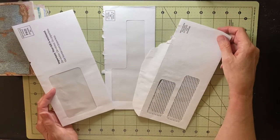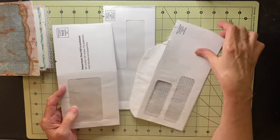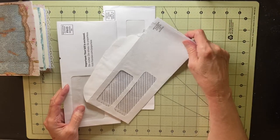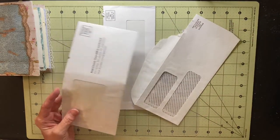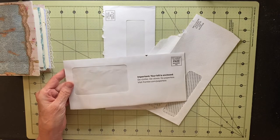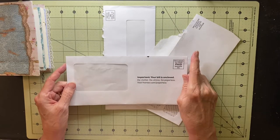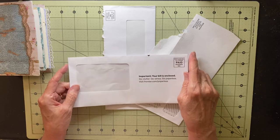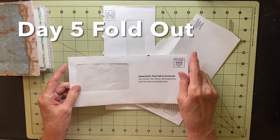Do you have envelopes like these with windows in them? Today I'm going to be using one similar to this to make Meg Journals Junk Journals July challenges for Day 4, Transparency, and Day 5.